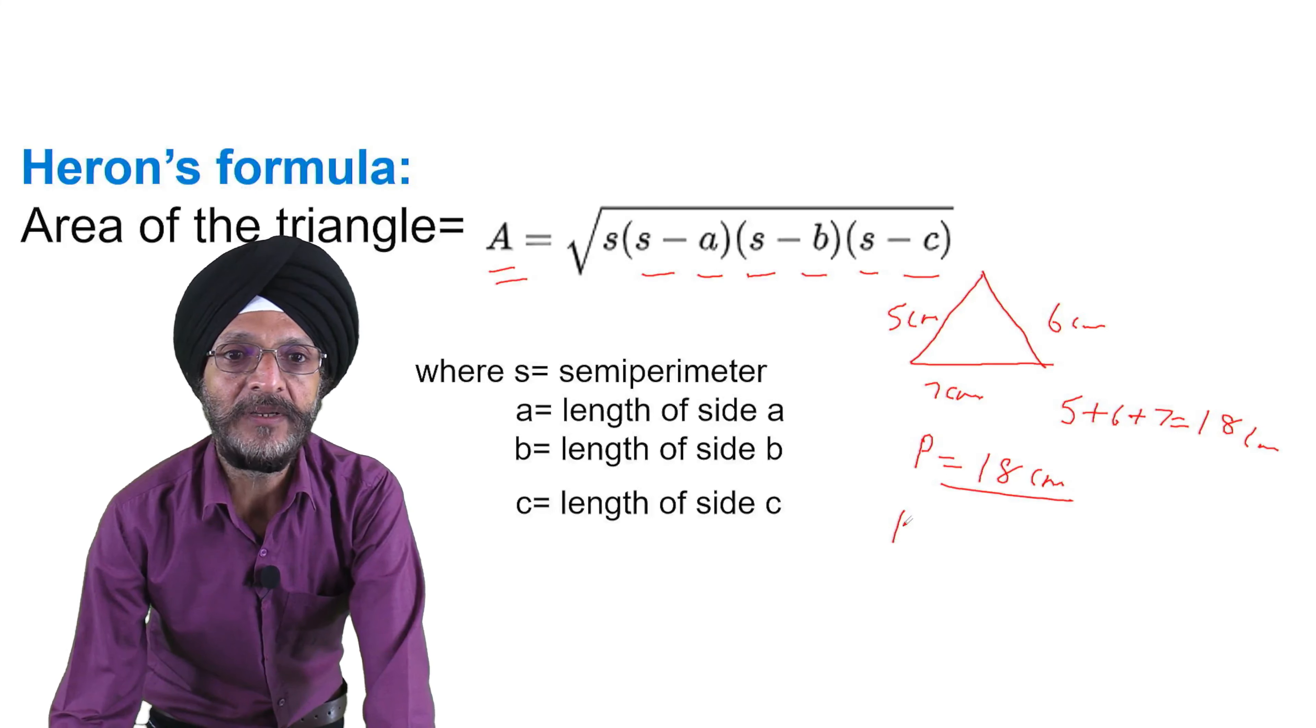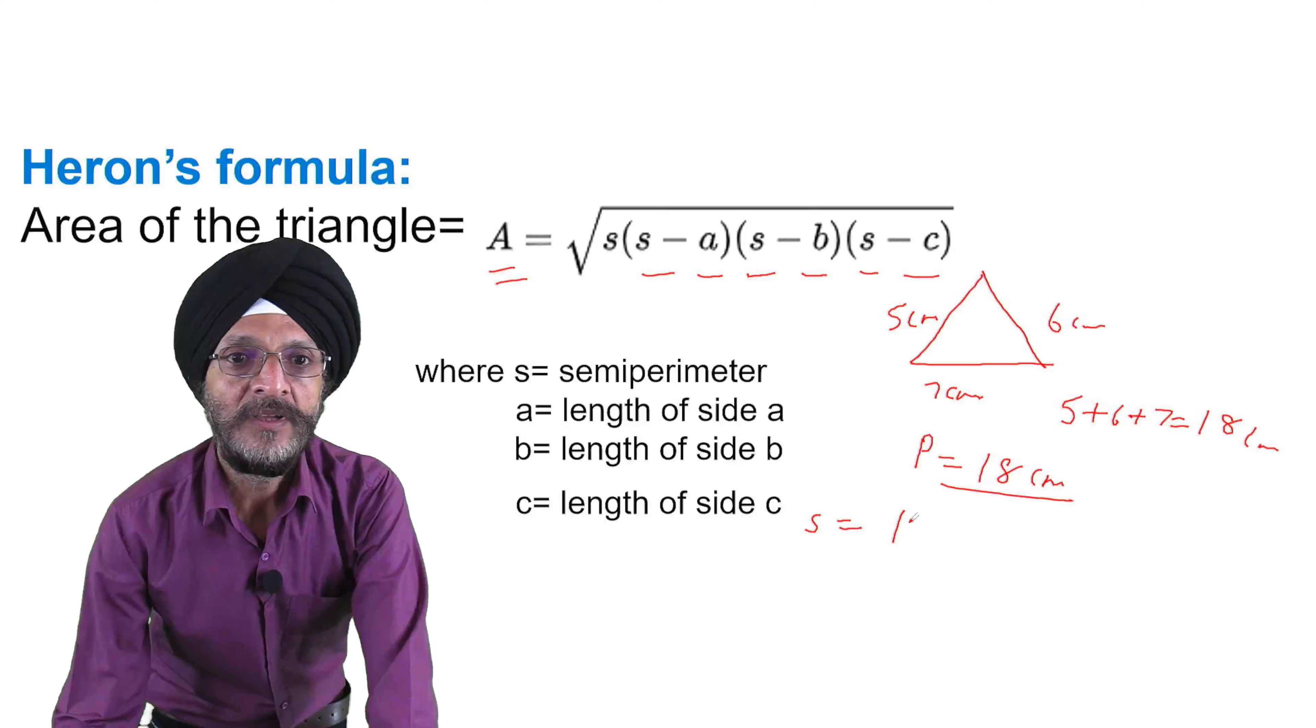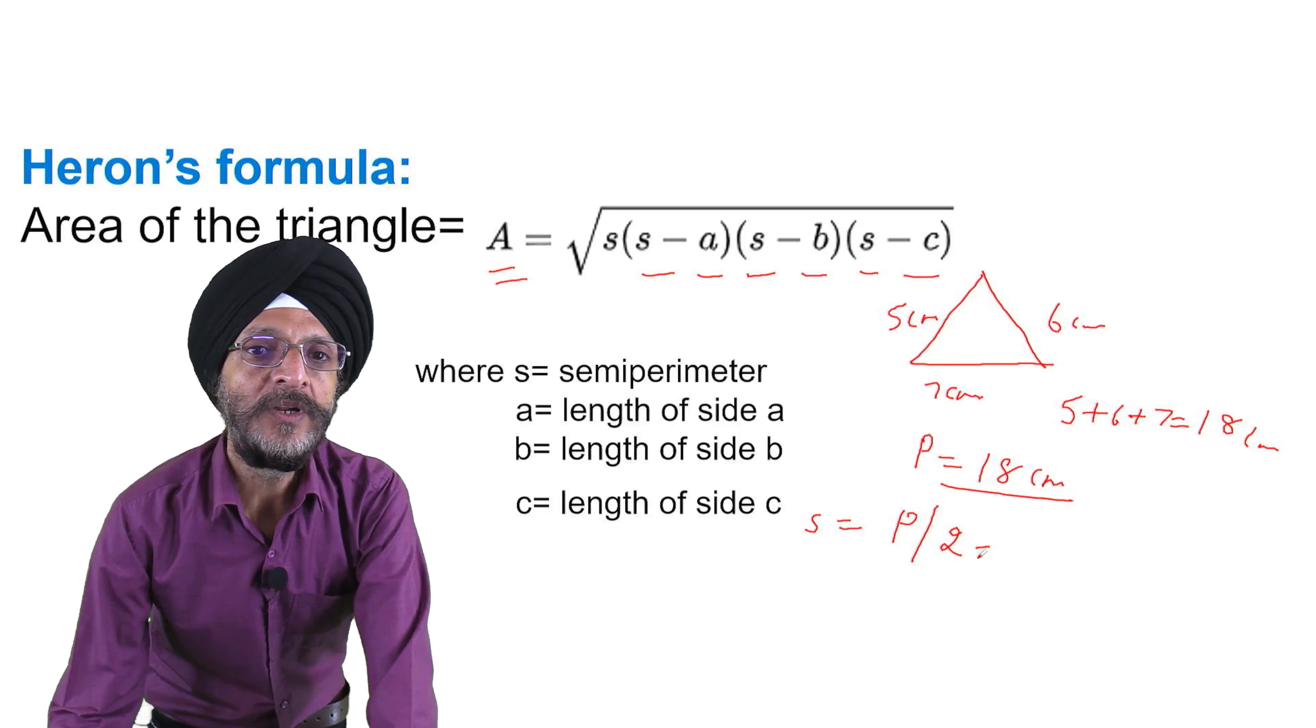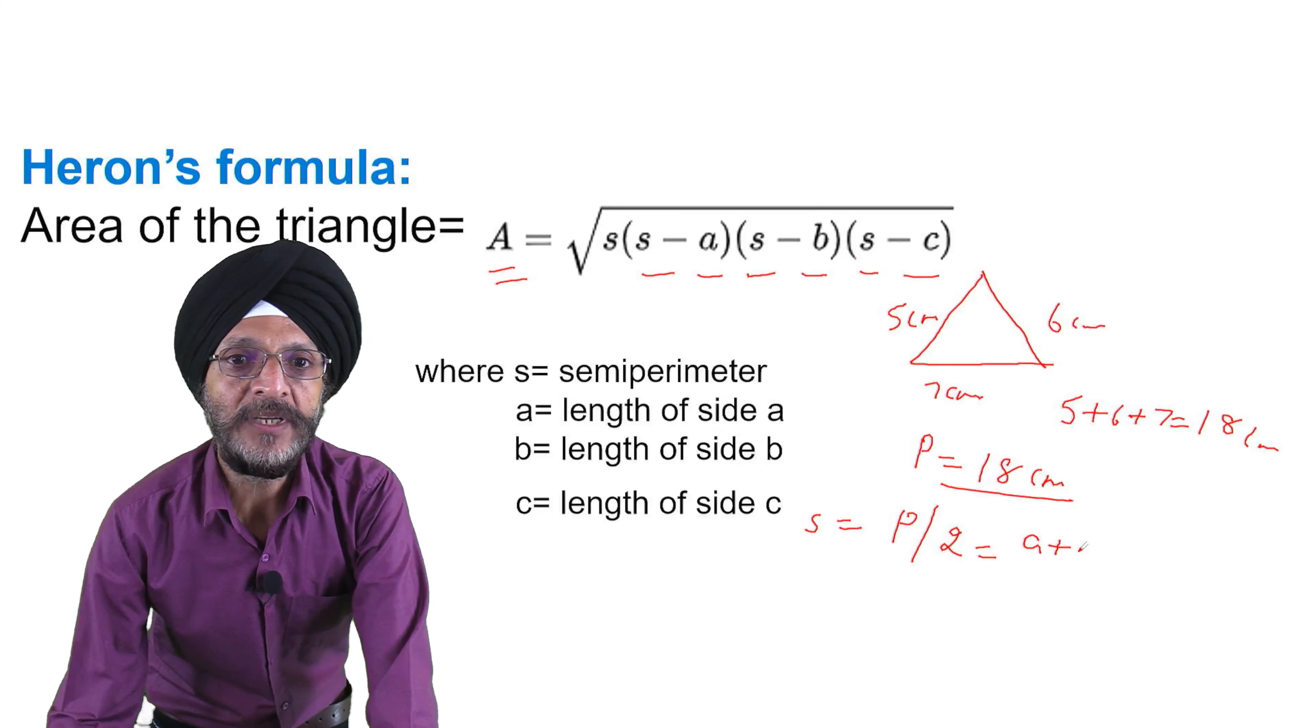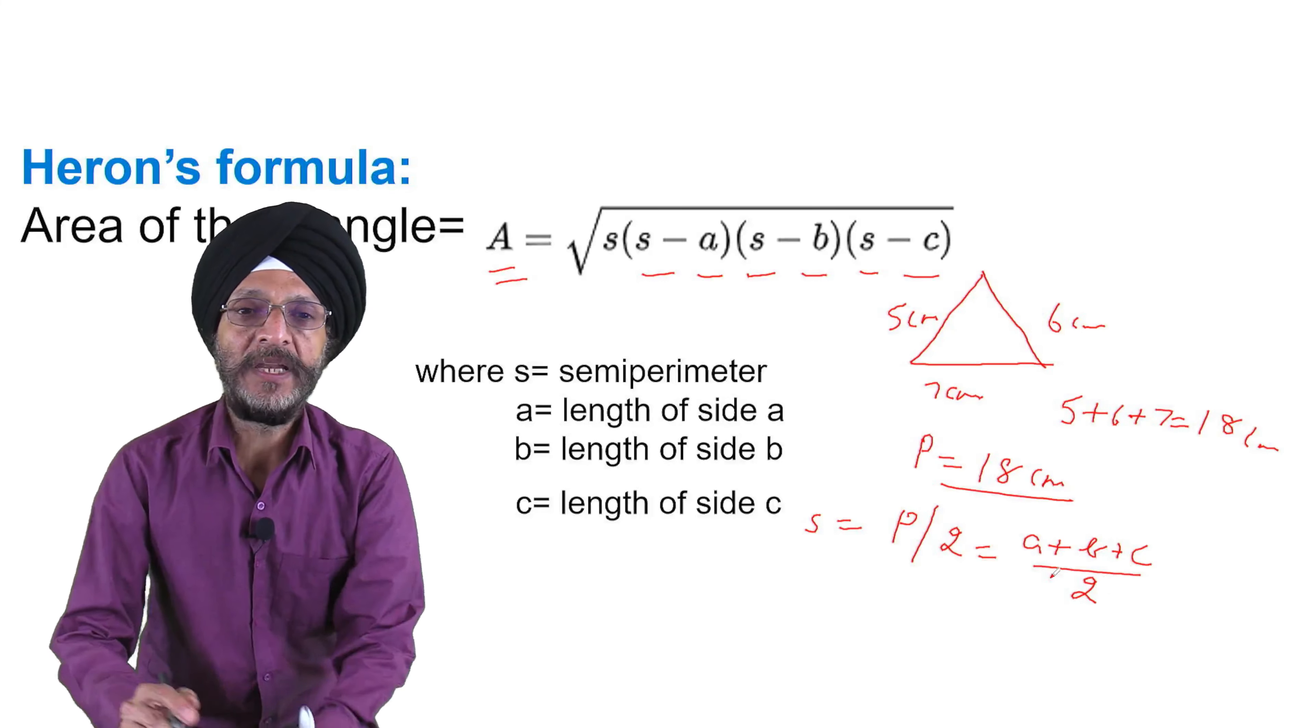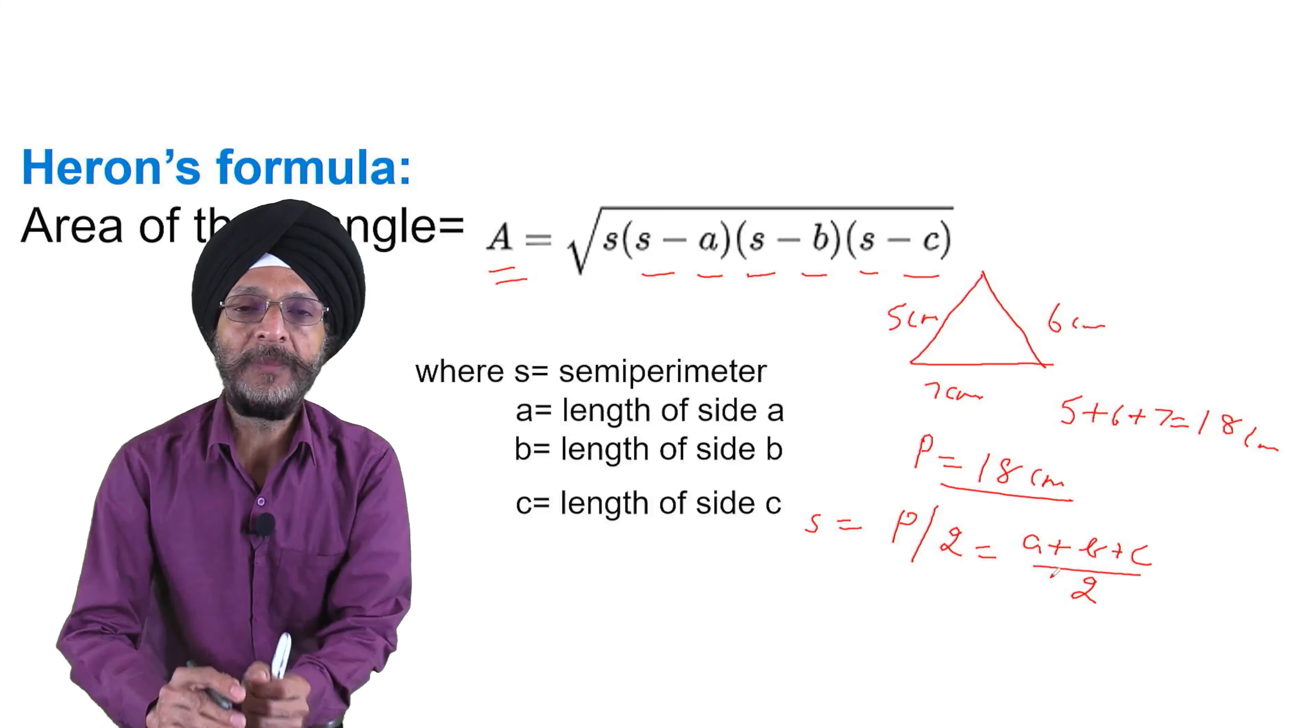Now, what is semi-perimeter? Semi-perimeter is perimeter divided by 2, or A plus B plus C divided by 2, because perimeter is equal to A plus B plus C, where A is length of side A, B is length of side B, and C is length of side C.